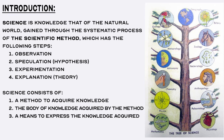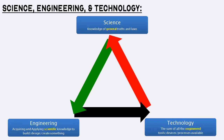Science consists of three things: a body of knowledge, a method to acquire the knowledge, and a means to express the knowledge acquired. Engineering is the application or use of scientific knowledge to create things for some intended purpose, and technology is what is created from the application or use of scientific knowledge.